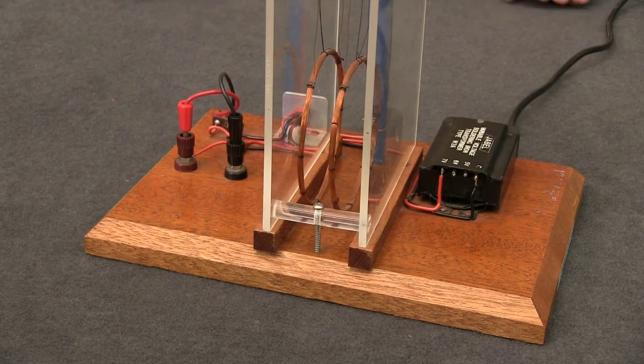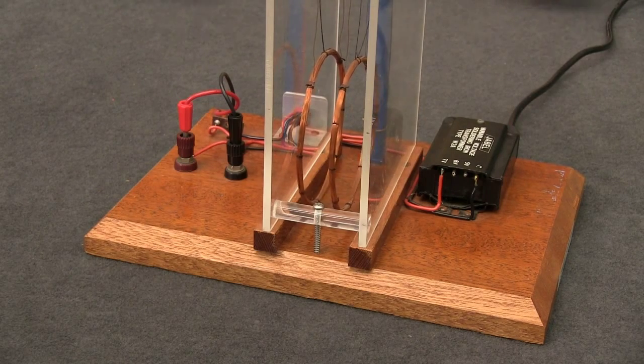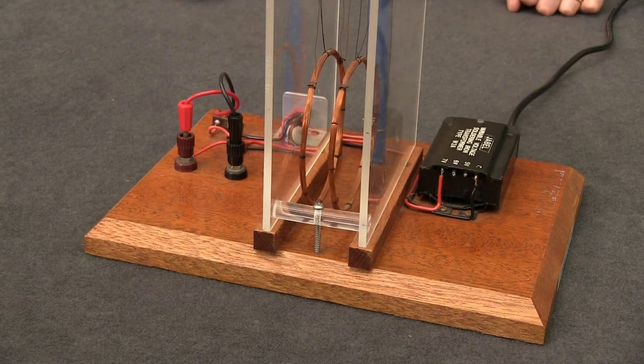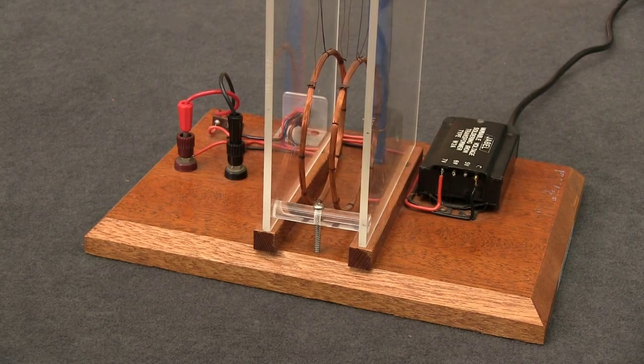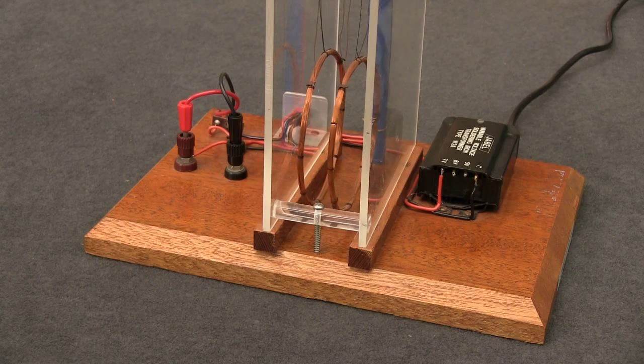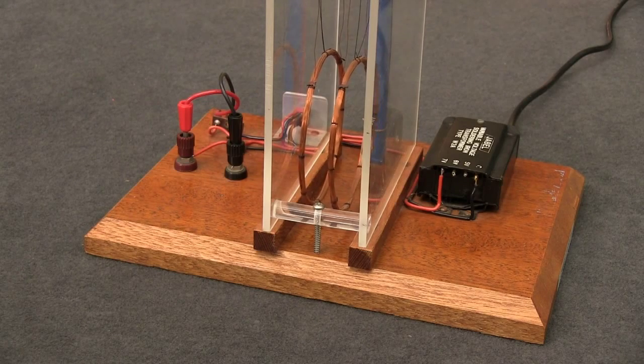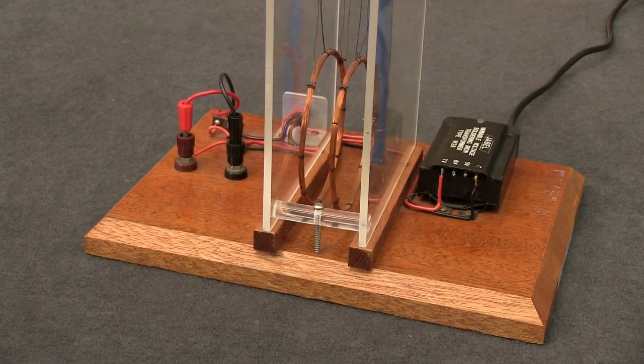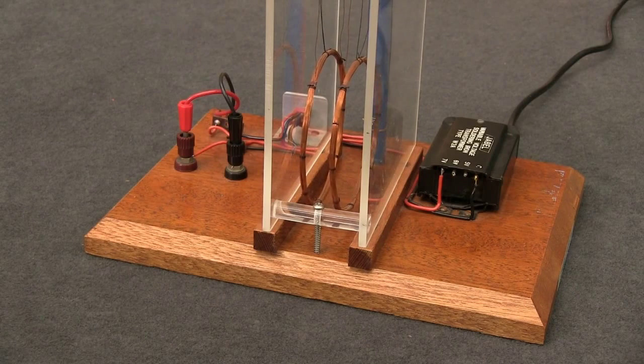Now many of you have probably seen the demonstration where you have two parallel pieces of straight wire and when the current travels in the same direction in the two wires they get attracted and they're repelled if the current travels in opposite directions.